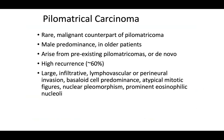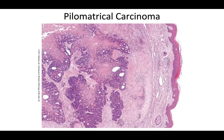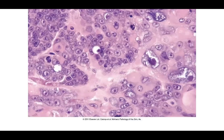You can have a pilomatrical carcinoma, which looks like a pilomatrichoma but has all the other features expected in a carcinoma: large infiltrative growth, lymphovascular or perineural invasion, basaloid cell predominance, atypical mitotic figures, and nuclear pleomorphism with prominent eosinophilic nucleoli. These are rare and essentially the malignant counterpart of pilomatrichoma, more often seen in males and older patients, arising from pre-existing pilomatrichomas or de novo. They have a high recurrence rate of 60%. On histopathology, it looks like a pilomatrichoma with basaloid areas and shadow cells, but it's more infiltrative with more nuclear atypia, pleomorphism, necrosis, and extremely large nucleoli.